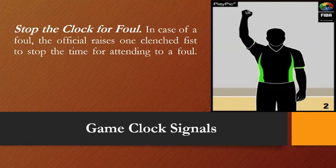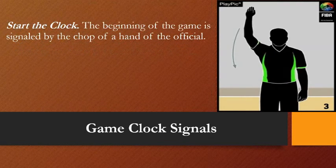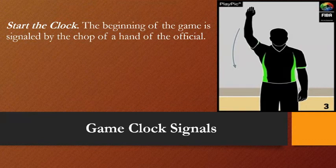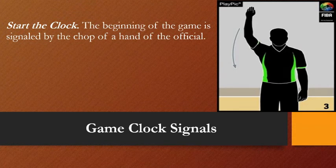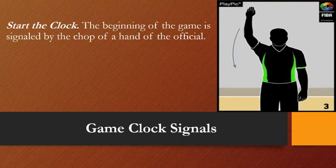The last game clock signal is to start the clock. The beginning of the game is signaled by the chop of a hand by the official. Once a player touches the ball, it is the duty of the referee to signal to start the clock. Also, once a player is inbounding the ball, the referee signals the timekeeper that the ball is alive and the time is running. That covers the game clock signals.